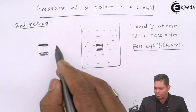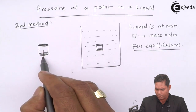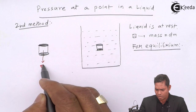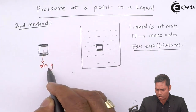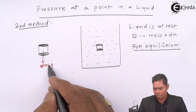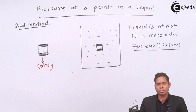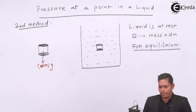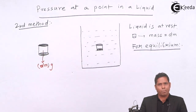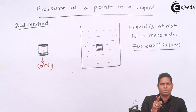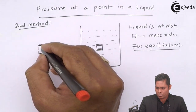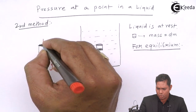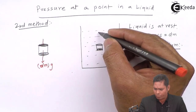Because this mass is dm, the weight acting downward is dm times g — that is the weight of this portion of the liquid acting downward.